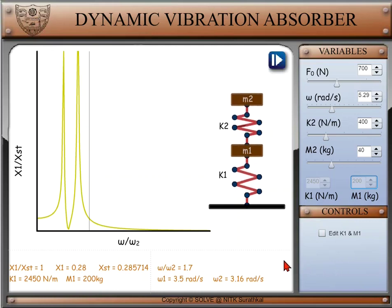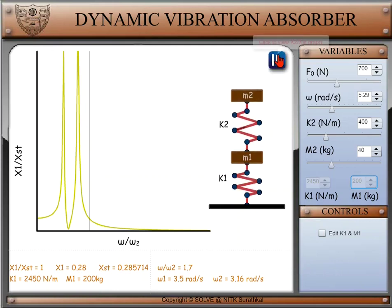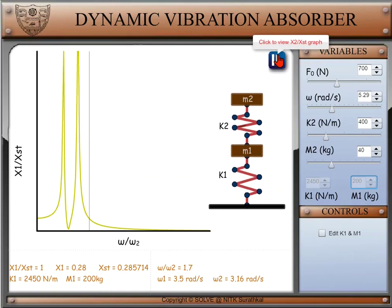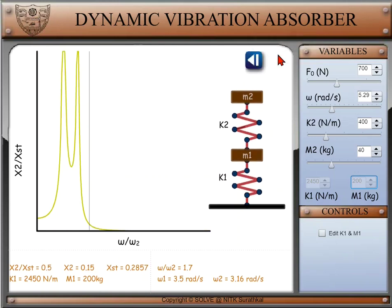Next, click on the first right arrow button on the top right corner of the animation screen to see the plot of the magnification factor of second body versus the frequency ratio. The magnification factor is the ratio of the amplitude of vibration due to forced vibration on the second body by the amplitude of vibration due to static force.